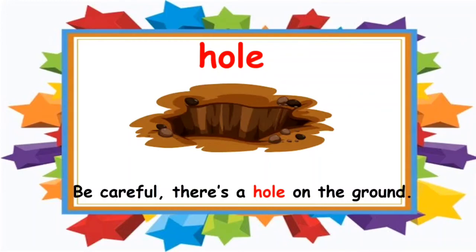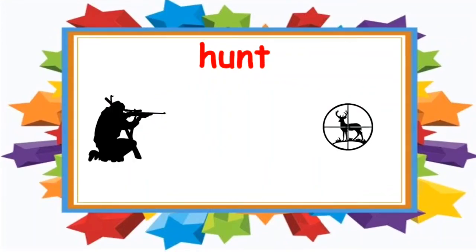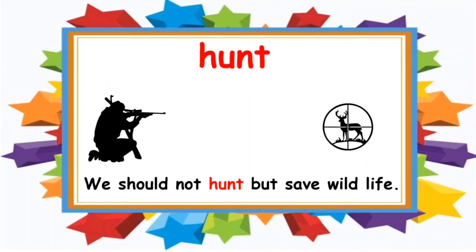The next word is 'hunt.' Children, I hope you are all repeating the words after me as well as looking at the words at the same time. Hunt means to run after wild animals. You can see the picture of a man with a rifle, and he is aiming at a deer. I have used the word 'hunt' in a sentence: We should not hunt, but save wildlife. We should not hunt to kill wild animals — so we should not hunt but save wild animals.